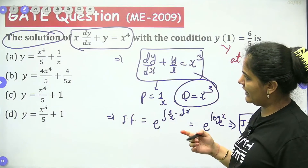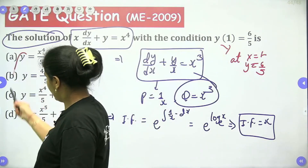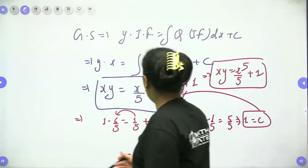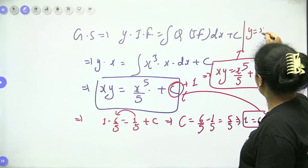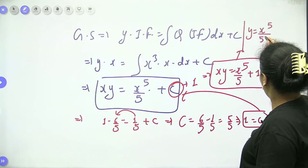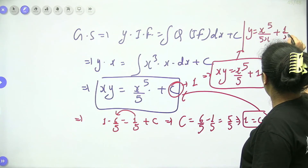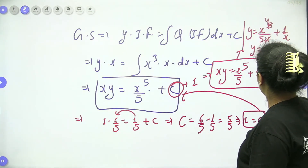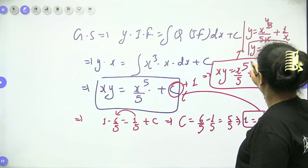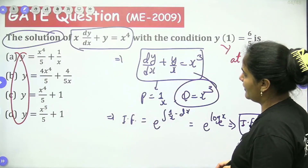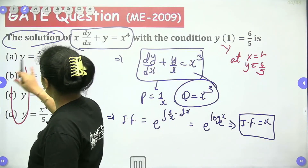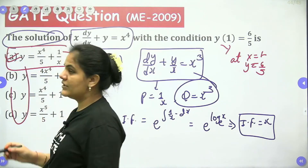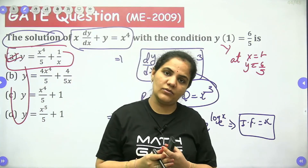The options are in the form of y equals something. So y equals x⁵/(5x) plus 1/x, which simplifies to y equals x⁴/5 plus 1/x. This is the final answer, which you can see in option A.